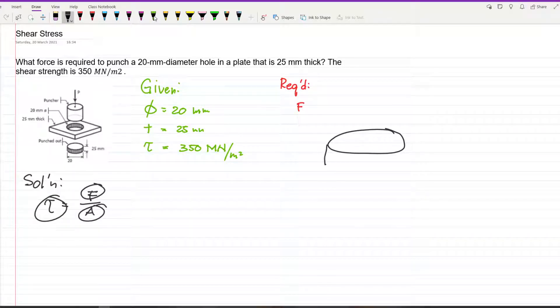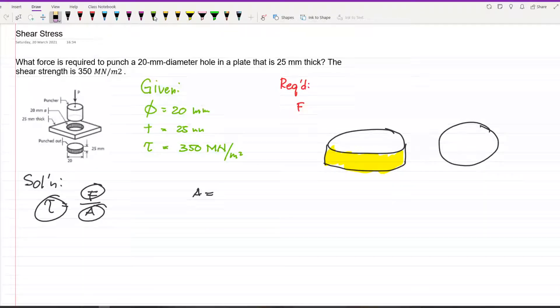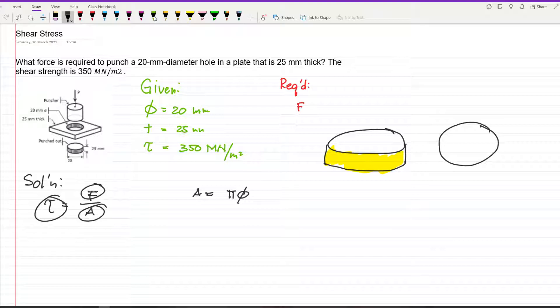This is the punched hole. The area is this part, like a wall. Area is equal to - imagine top view - the circumference of the hole times the thickness. Circumference is pi D or 2 pi R times thickness.